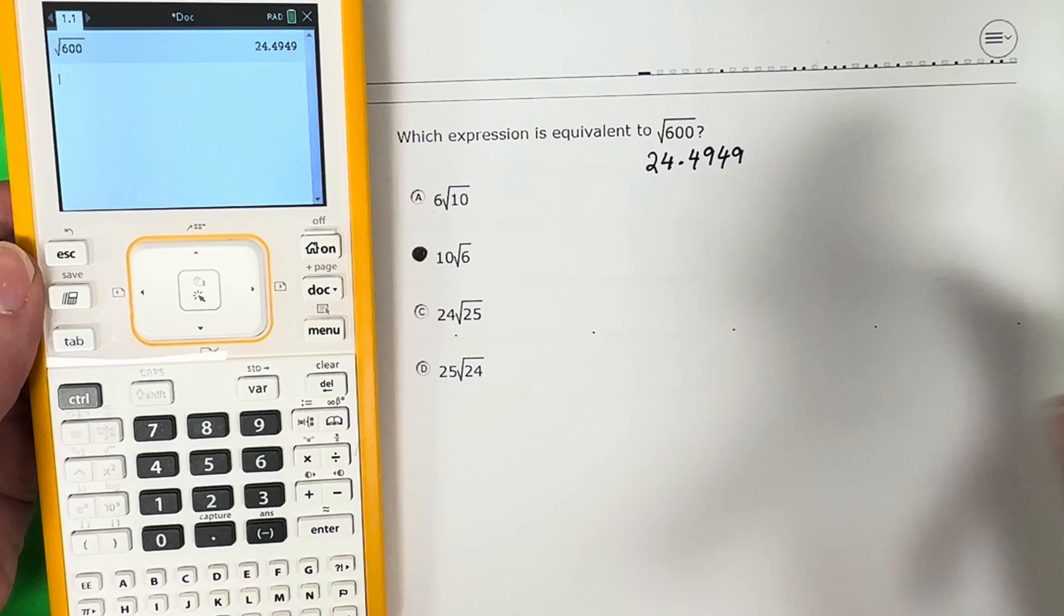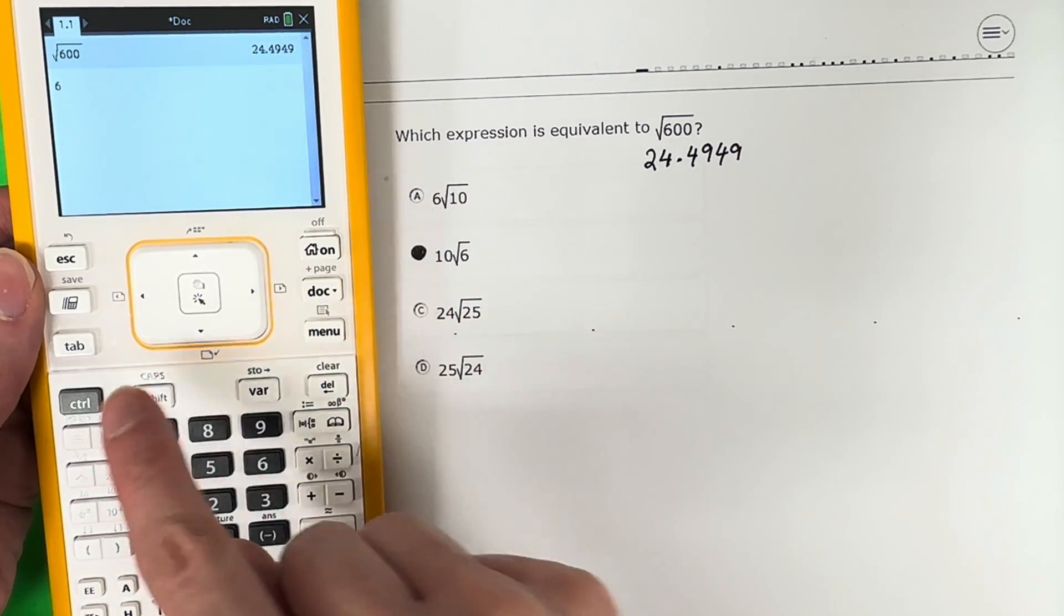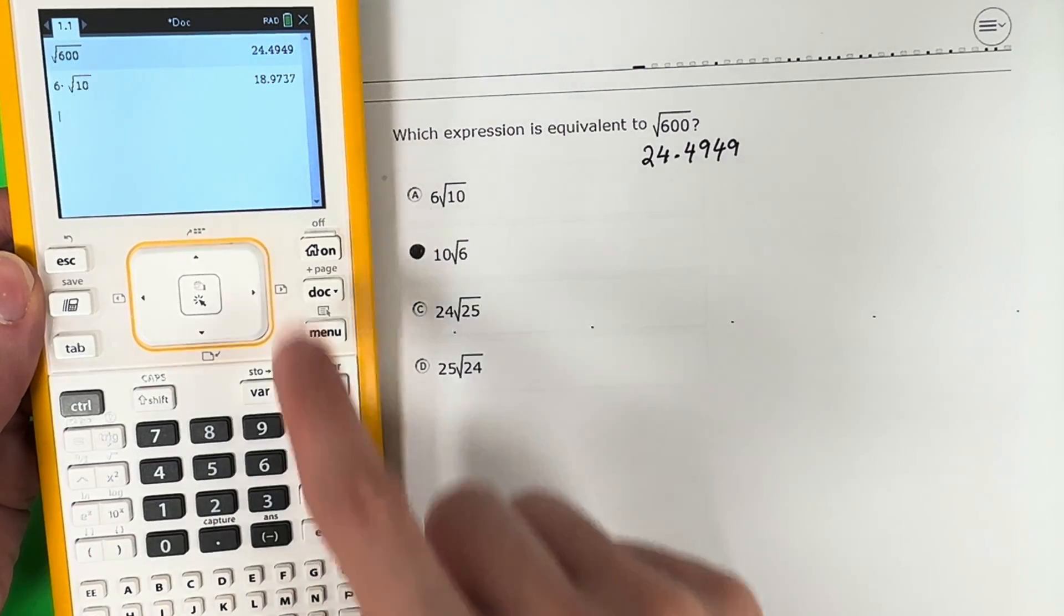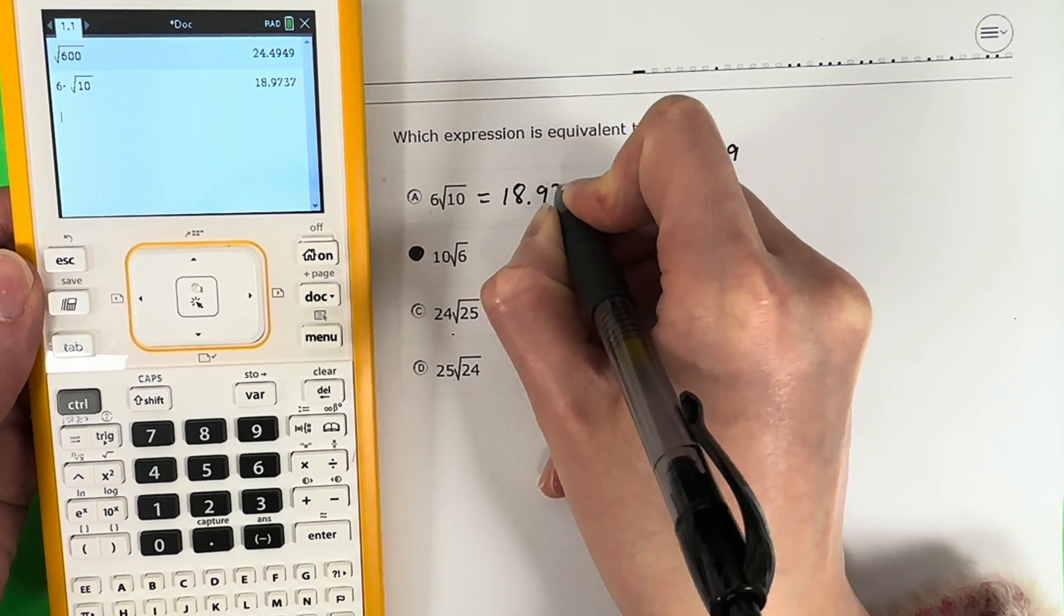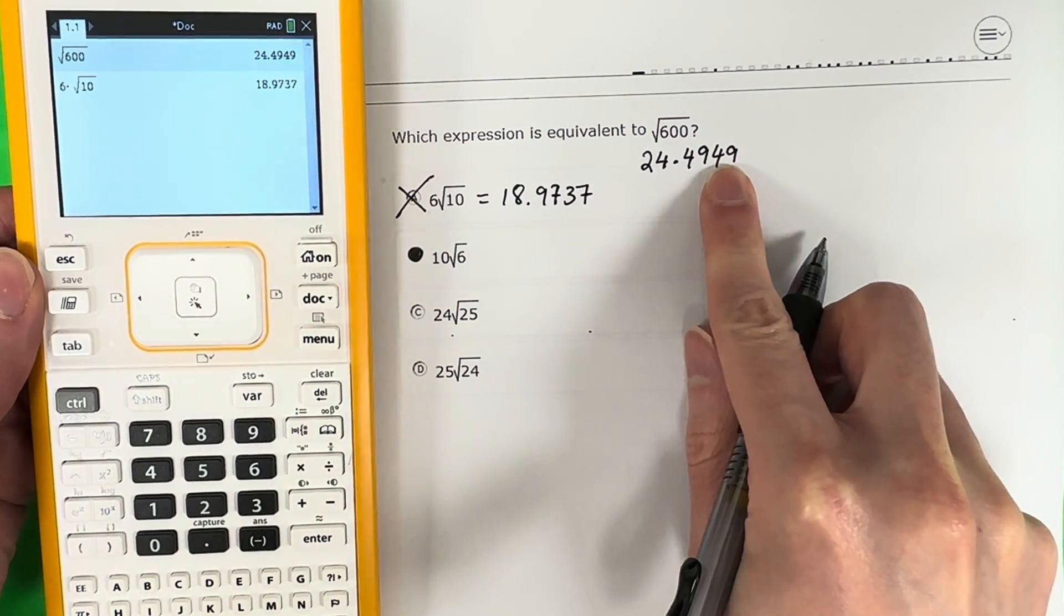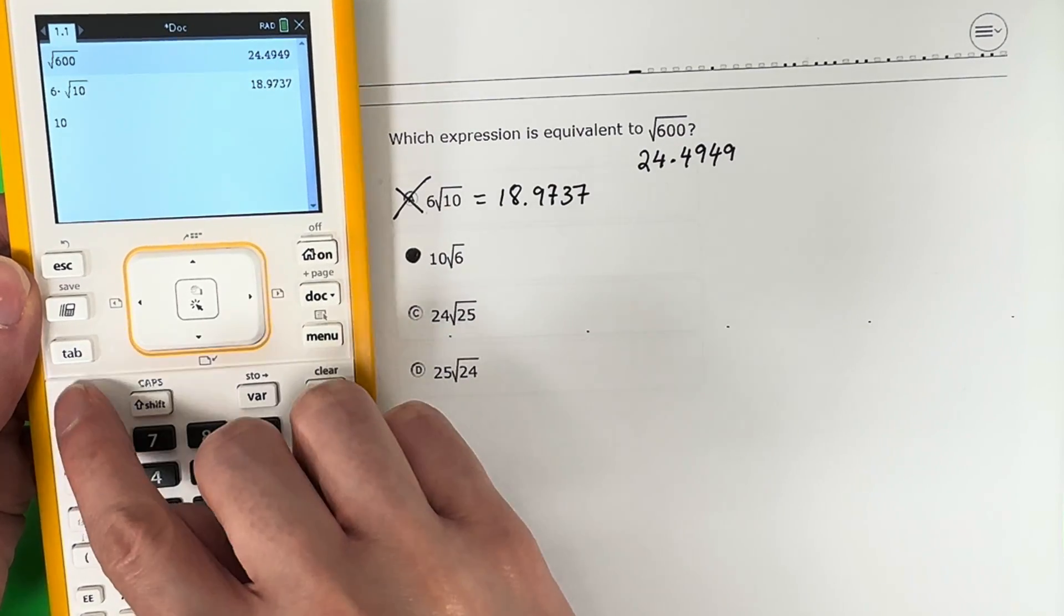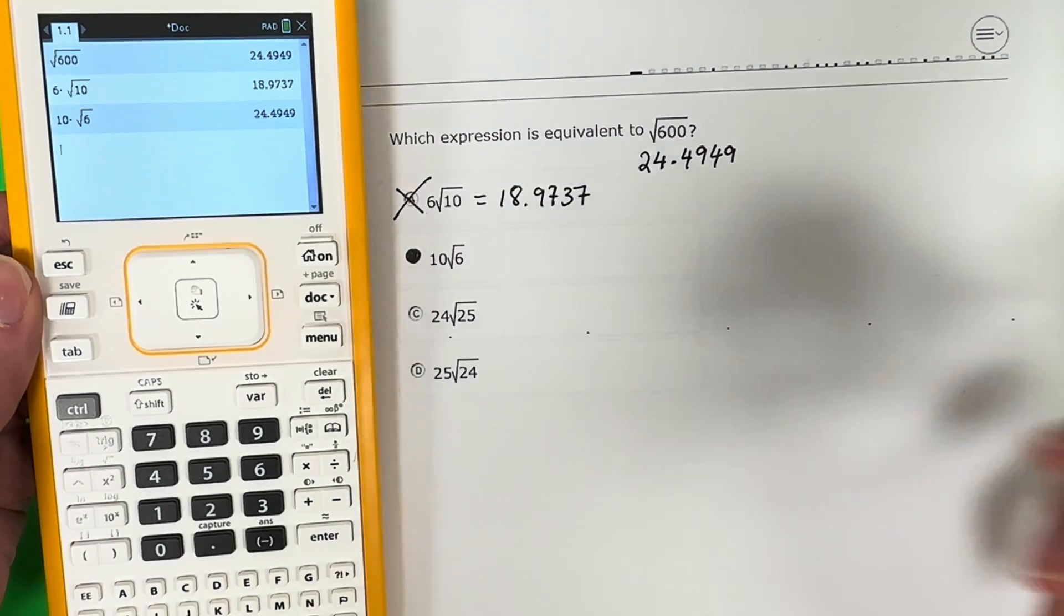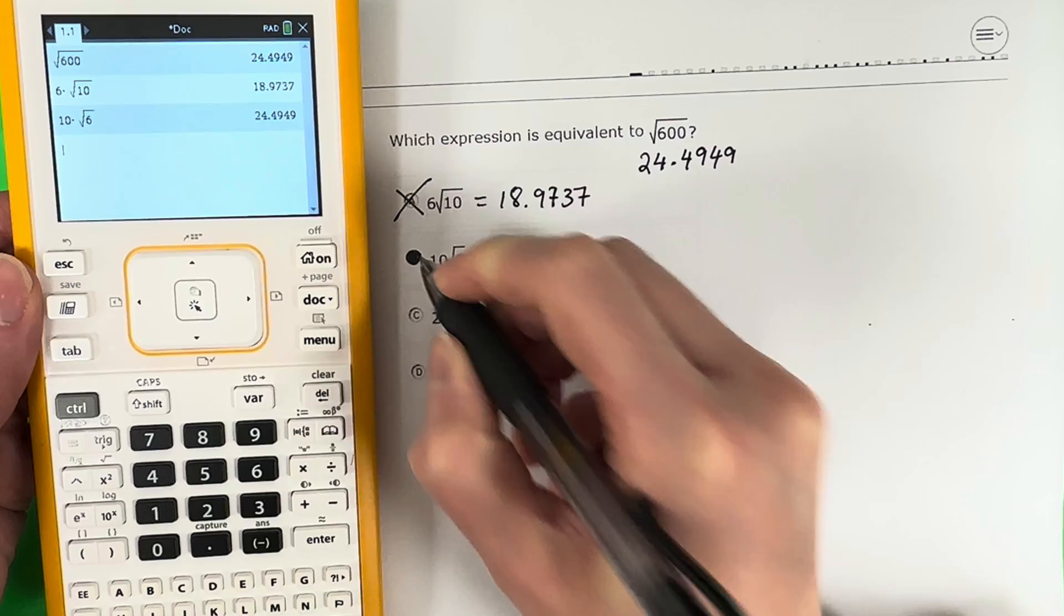Let's go ahead and do 6 times square root of 10. Just put it the same, exactly the same. 6, control, x squared for the square root, and you put 10. Enter. That's 18.9737, which is not the same. Let's go ahead and do this one that we know is correct. 10 square root of 6. There we go. That's correct. That's the same one. That's the answer.